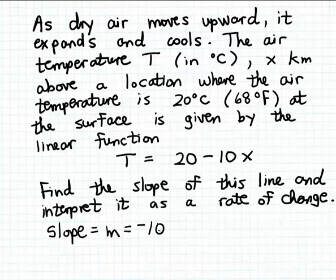So we know the slope is minus 10. And how do we interpret that as a rate of change in a practical context? Well, in general, what the slope tells you is the amount that the output is going to change in a linear function when the input increases by one unit. So that's sort of the generic interpretation of the slope.